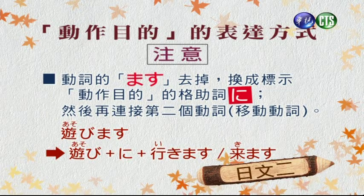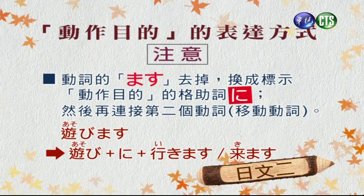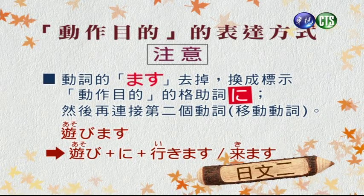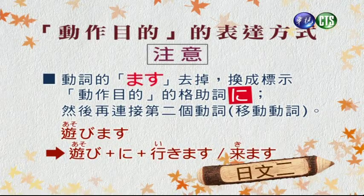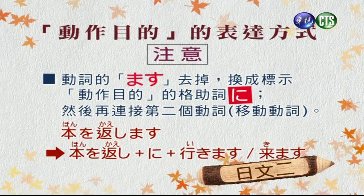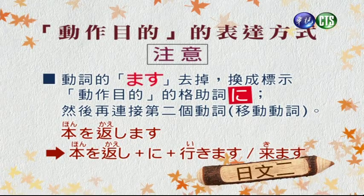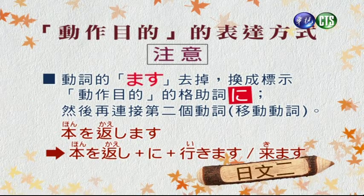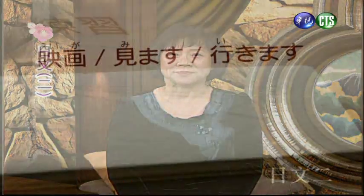譬如說遊びます，變成遊び，加上動作目的的に，再加上移動性動詞いきます或是きます。本を読みます就變成本を読みに加上いきますまたはきます的用法。那麼我們來做這個練習。